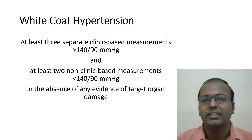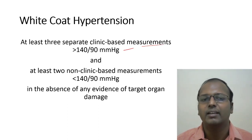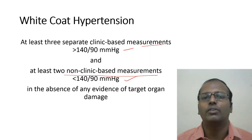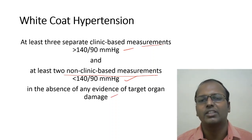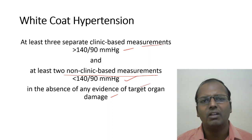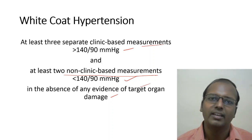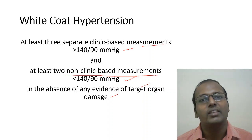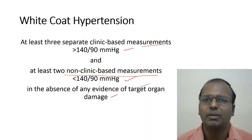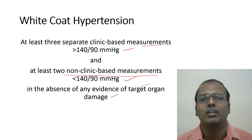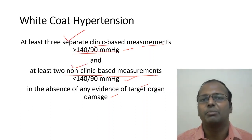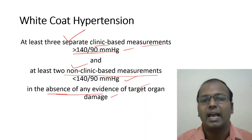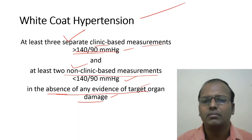White coat hypertension: at least three separate clinic measurements more than 140/90 mmHg, with two non-clinic measurements less than 140/90 mmHg in the absence of any target organ damage (kidneys, eyes). The patient's BP is elevated only in the clinic setting but normal at home or office. The absence of target organ damage is a very important criterion.